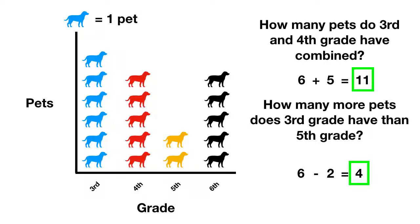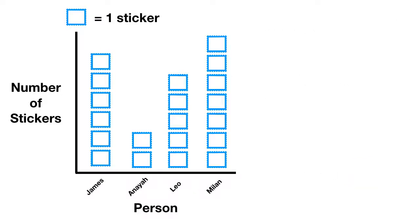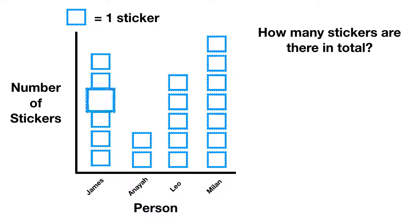Now here's your last graph for today. In this graph, four friends have sticker collections. The number of stickers they have in their collection is shown on the graph. The first question is, how many stickers are there in total? Well, you have to add all of them up. So you'd count that James has one, two, three, four, five, six.